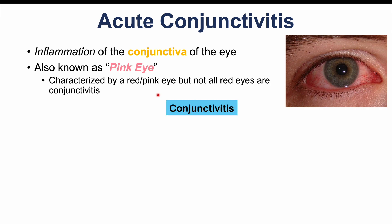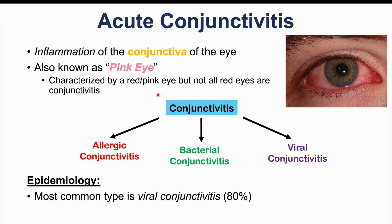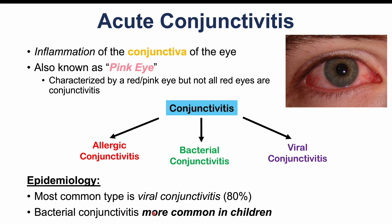There are three different types of conjunctivitis we're going to talk about in this lesson. One is known as allergic conjunctivitis, the second is bacterial conjunctivitis, and the third is viral conjunctivitis. The most common type is viral conjunctivitis, which makes up 80% of all cases. Bacterial conjunctivitis is more common in children.